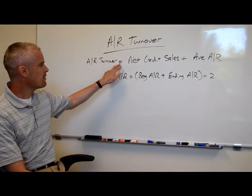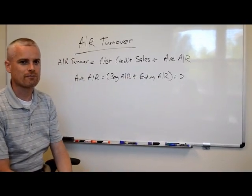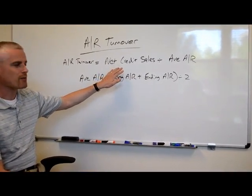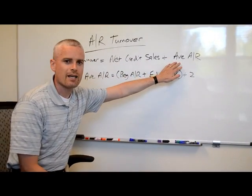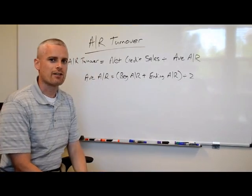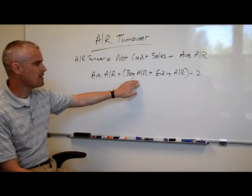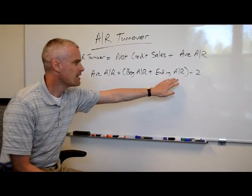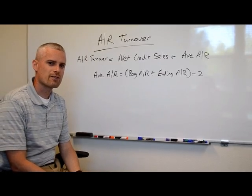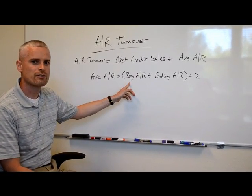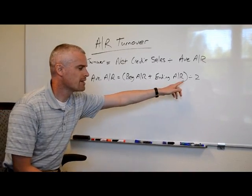AR turnover equals your net credit sales divided by your average AR. Normally you do this for one year — your total annual net credit sales divided by your average AR for the entire year. Average AR is calculated as your beginning AR plus your ending AR divided by two. So if you had a calendar fiscal year, you take your January 1st AR plus your December 31st AR and divide by two.